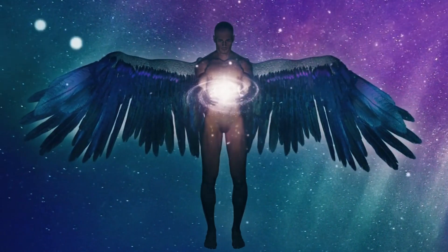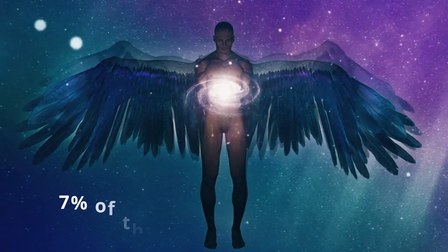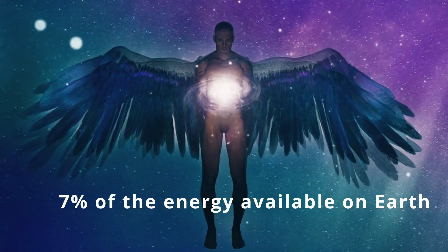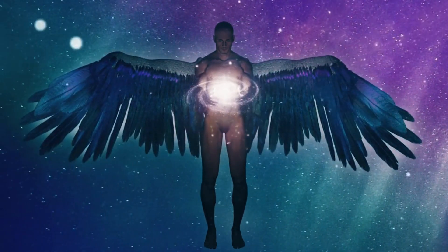We are currently at about 0.7 on the Kardashev scale, which means that we can harness about 7% of the energy available on Earth. The amount of energy available on Earth is so large that it has taken us thousands of years to even get close to this level.